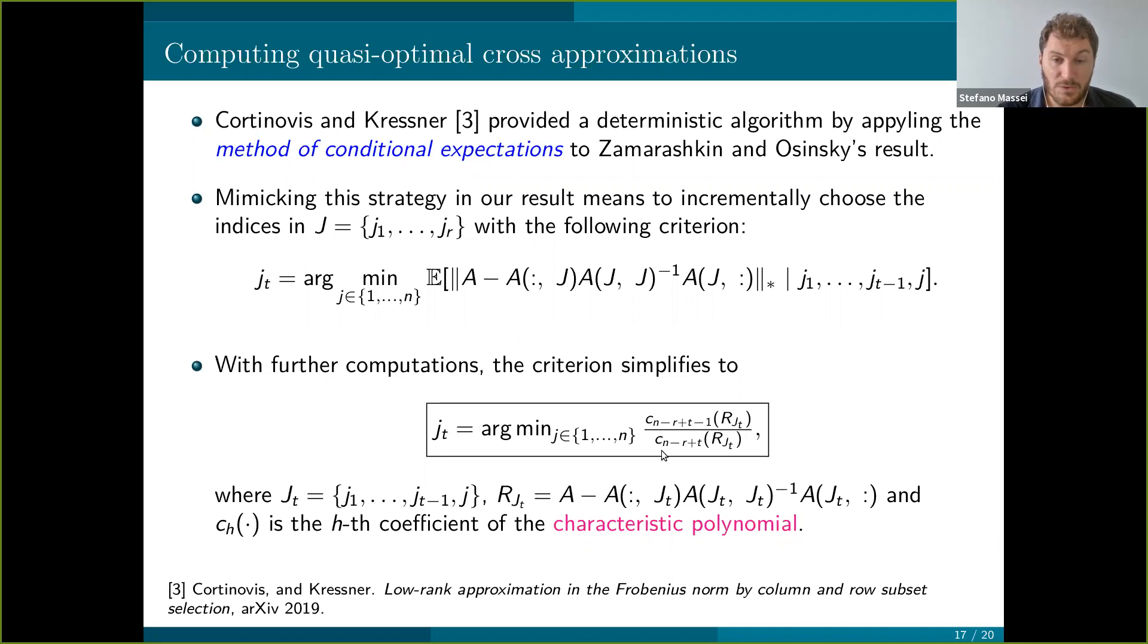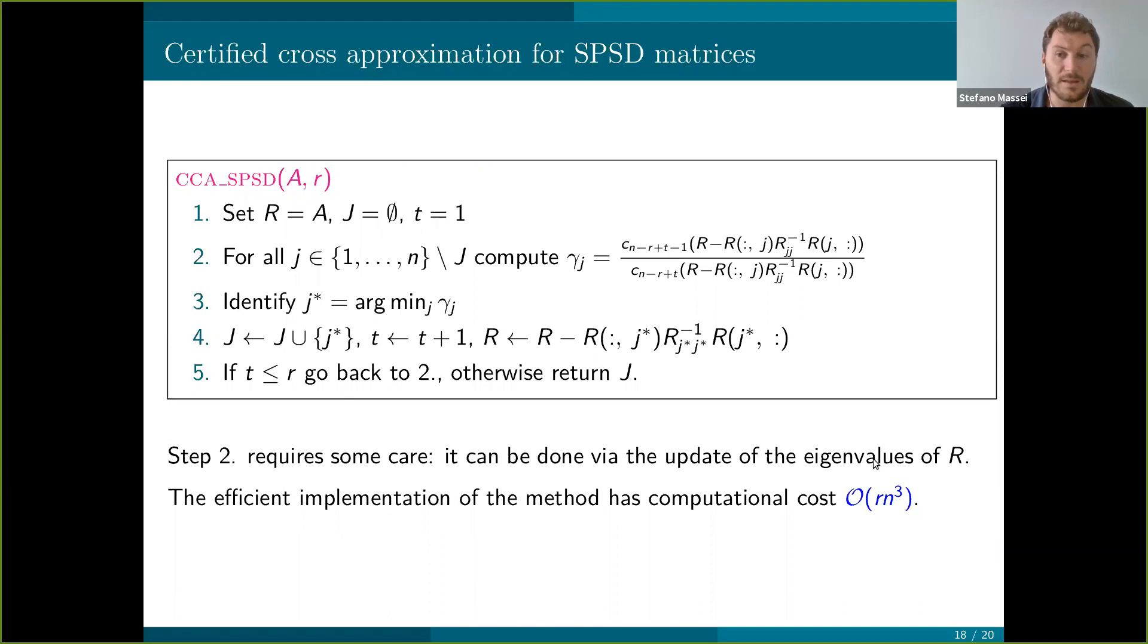This suggests using this as a criterion for choosing the next index. It leads to the following greedy scheme that we call certified cross approximation that works as follows. You start with residual metrics equal to the target metrics, and then for any possible choice of J that is not already in capital J here, you compute the residual metrics associated with this choice, then its characteristic polynomial and this ratio. You do this for every J and you select the one that minimizes this ratio. Then you update J, you update the residual metrics and you iterate until you get R indices.